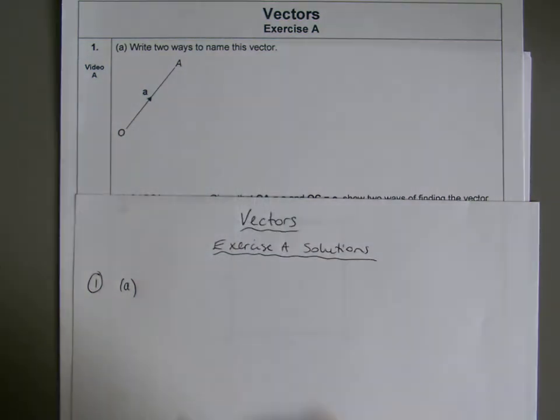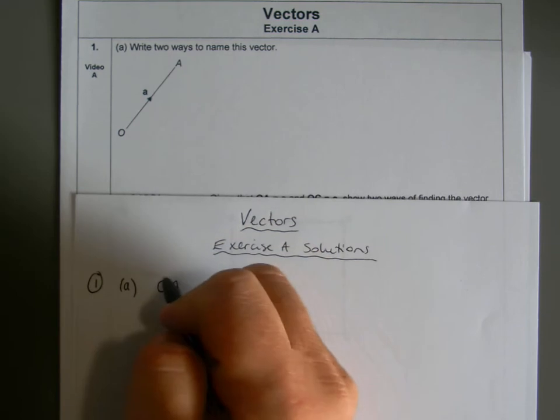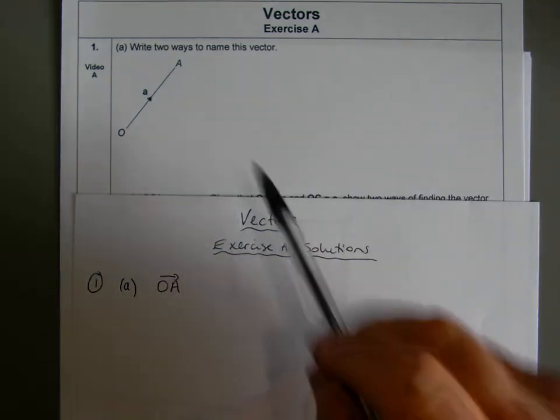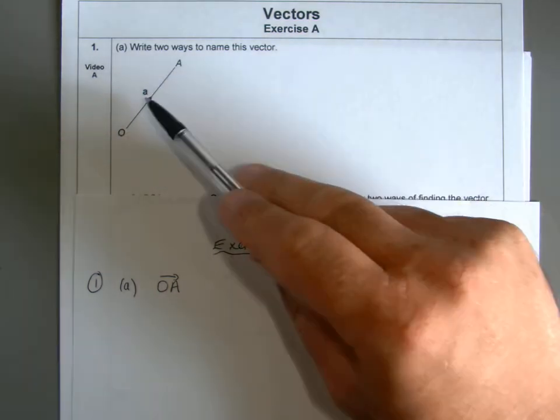Okay, so this is the vector OA. We can name it as such, right? OA with an arrow above it. The reason why we put an arrow above it is because the vector takes us from O to A.